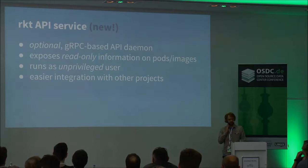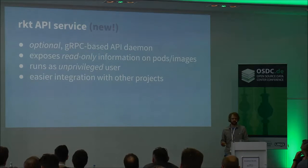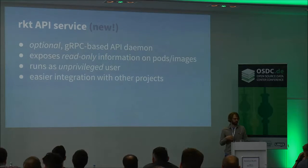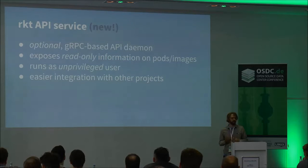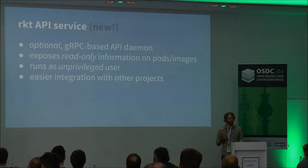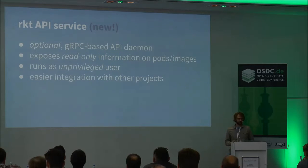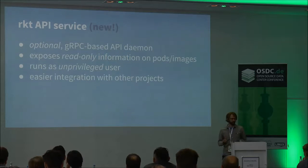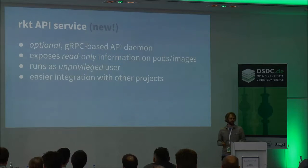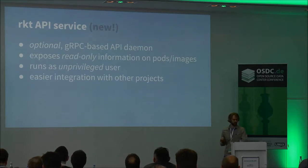The other thing recently added to Rocket is the API service. There's an optional daemon you can start on a system running Rocket that exposes information about what's running in a much more efficient way — information around pods and images — instead of having to run the Rocket command to do that. You just talk to this simple gRPC daemon. The nice thing is that it can run as an unprivileged user — it doesn't need to be root. So we don't need any long-running root daemons on the system. This is one of the key parts of our integration with Kubernetes.